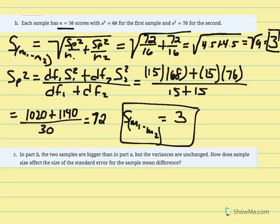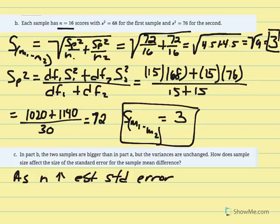Part C asks us to consider the effects of larger sample size. As n increased from 4 to 16, the estimated standard error decreased from 6 to 3. We can take this further: as n increases, estimated standard error decreases, and the t statistic increases. Larger t values mean a greater likelihood of rejecting the null hypothesis.